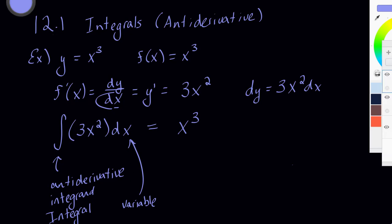Now, we can check our work by taking the derivative of that function. So let's go ahead and do that. If we took the derivative of x to the third, we would see that we did, in fact, get 3x squared.